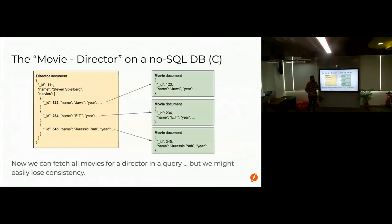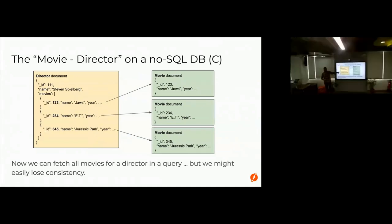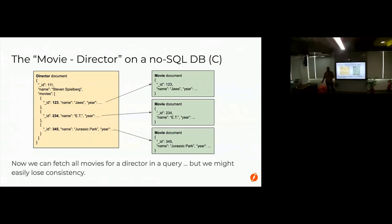You could repeat information across documents, but if a movie has more than one director you start duplicating data. The worst part is consistency — if you update movie info in one place and forget to update it in another, you've lost consistency. And the whole point of a database is to help you be consistent. So these are problems that have workarounds, but you still need to think about and apply those techniques.